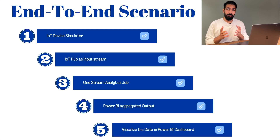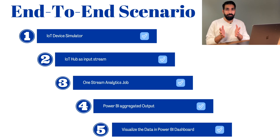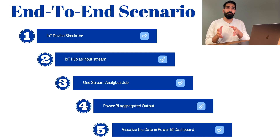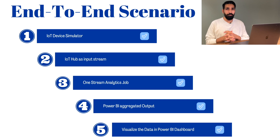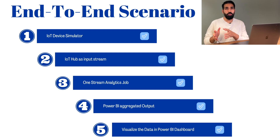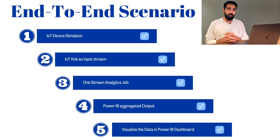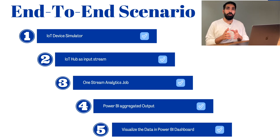This process will be completed in five main steps. First, generate data using an IoT device simulator. Second, get the data into an IoT Hub by creating one in Microsoft Azure. Third, create an Azure Stream Analytics job to move data from the IoT Hub to Power BI. Fourth, aggregate the output data from the IoT device. Fifth, display the data in a Microsoft Power BI dashboard.